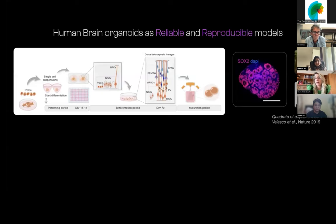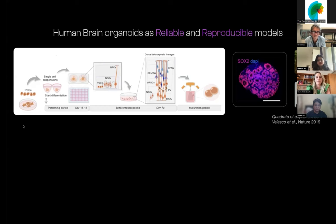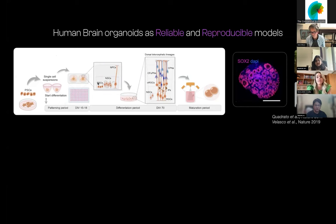In the lab of Paola Arlotta, for many years now, we have been working on generating very reliable and reproducible models that have high fidelity to endogenous tissue. This work was pioneered in the lab by Giorgia Quadrato and followed by Silvia Velasco. We go from pluripotent stem cells and pattern them — in this case, these are guided organoids directed toward dorsal telencephalon — generating neural stem cells and neural progenitors guided toward the cerebral cortex. At the end of the differentiation process, we have the whole compendium of cell types expected from the dorsal telencephalon.